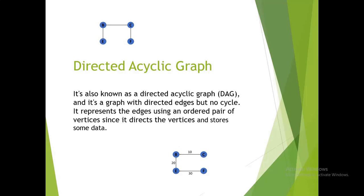Directed acyclic graph: it is also known as a directed acyclic graph (DAG), and it is a graph with directed edges but no cycles. It represents the edges using an ordered pair of vertices since it directs the vertices and stores the data.